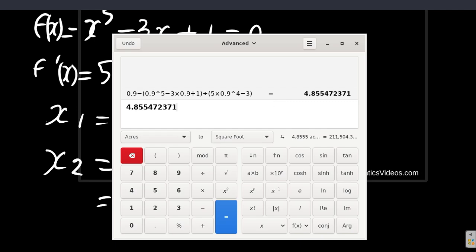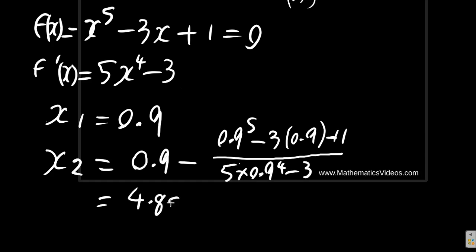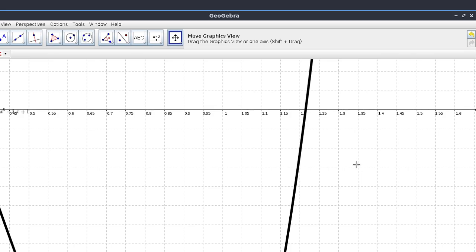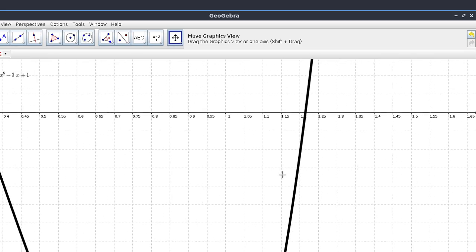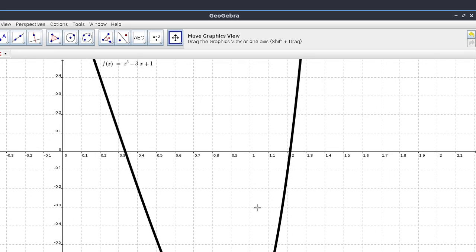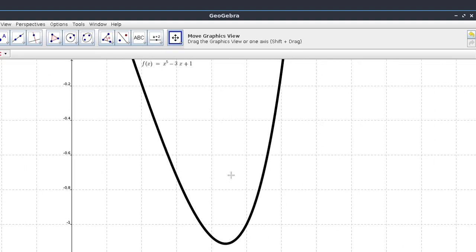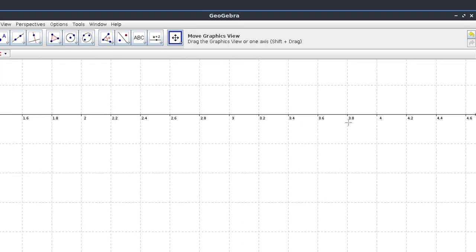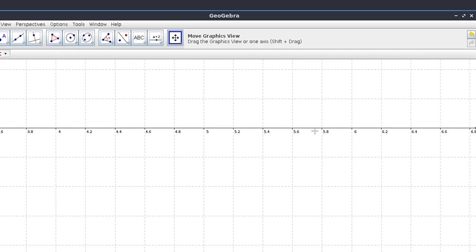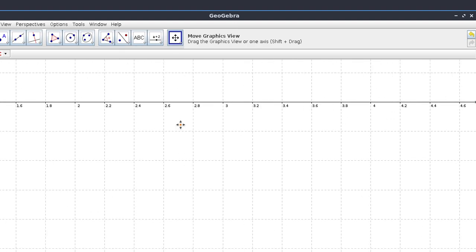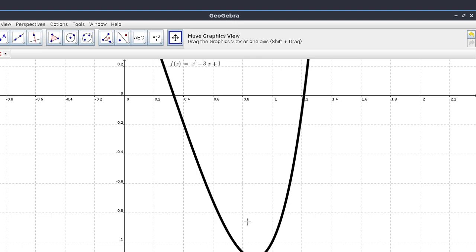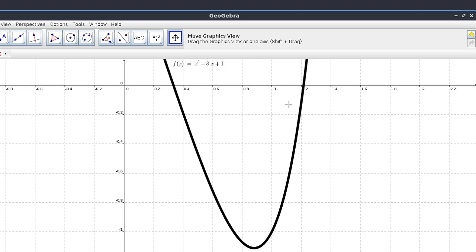So we have 4.855. Let's look back at our graph. Now you see the reason why they say the estimate should be close, I mean your estimate should be close to the real root, or else Newton-Raphson will get out of control. It's giving us a value 4.8 something all the way out here. So it had swung out of control because we did not use a value that is close to the actual value.